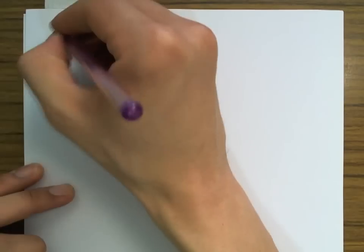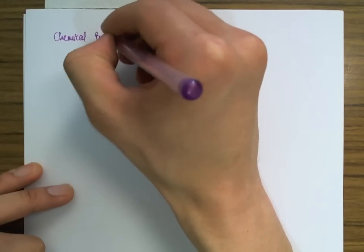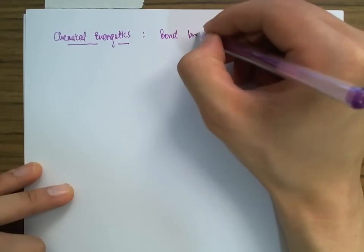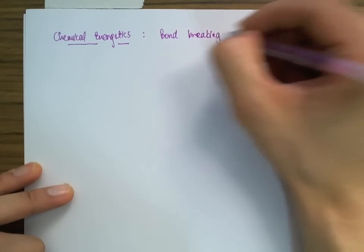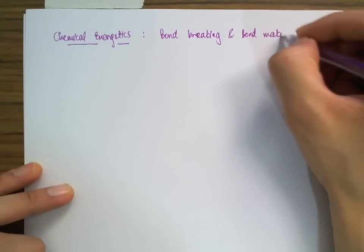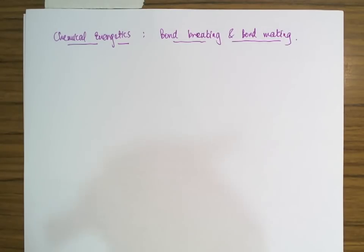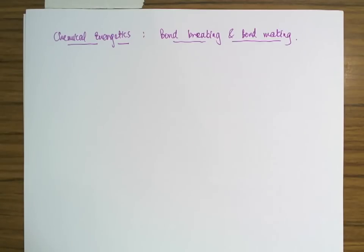Hi guys, this is the second video in the series on chemical energetics and today we'll be looking at bond breaking and bond making. We're going to take an inside look at how bond breaking and bond making actually influences whether a reaction is endothermic or exothermic. If you've not seen the last video, please go back and watch that before coming back to this one.